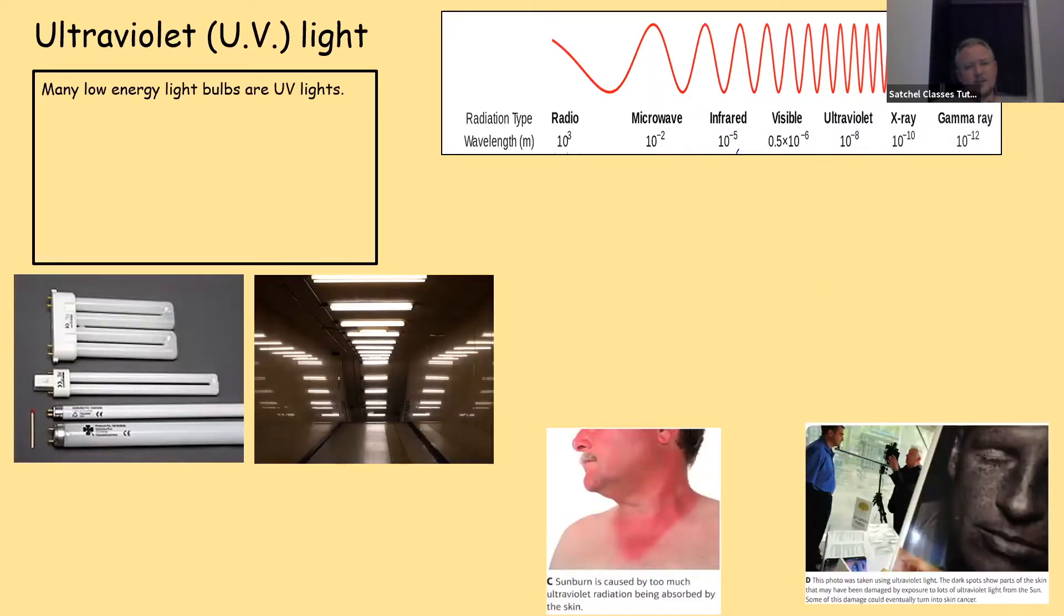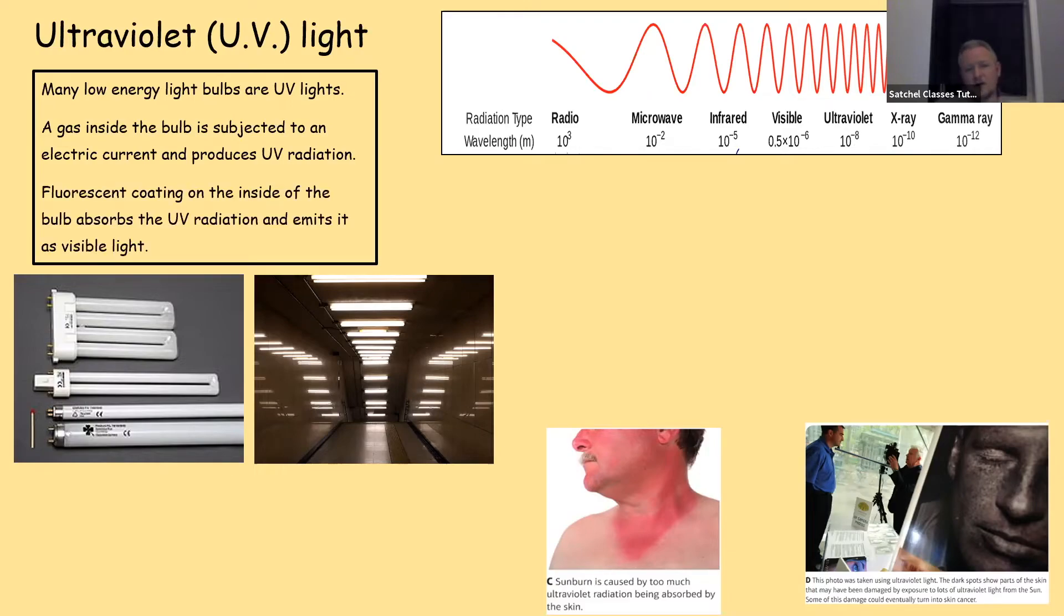Continuing with ultraviolet light, many low energy bulbs are UV lights. Strip lights for example. Strip lights are a plasma type light. They contain a gas and when you pass a current through it, that gas glows with UV light. We can't see this but inside the bulb there is a white coating and that white coating is fluorescent so it absorbs the UV light being produced and then re-emits it as visible white light. It's why when you turn the light on for a strip light, it takes a second or two for the light to be re-emitted so you see flickering while it's absorbing and then re-emitting the UV light.